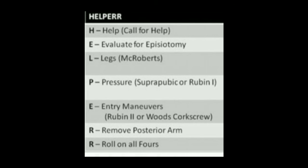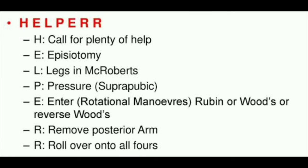It is important to note the time of shoulder dystocia and delivery. The aim is to deliver the baby between five to seven minutes. If the time consumed is less than five minutes, maneuvers can be repeated. As a last resort, if not successful, we have to go for third-line maneuvers like rescue procedures, which include certain destructive procedures as well.